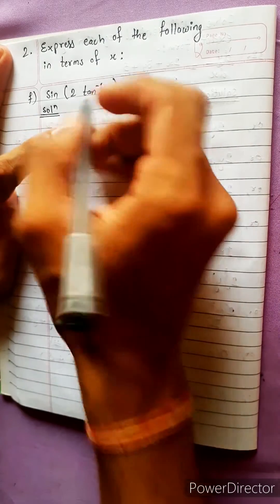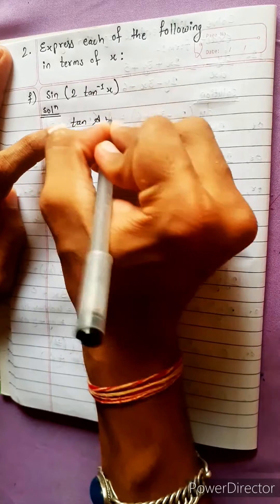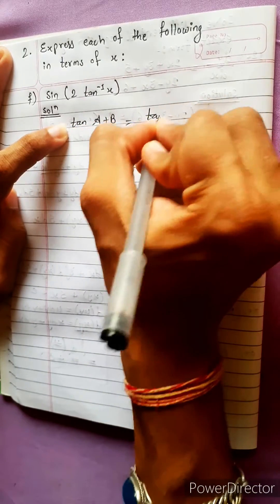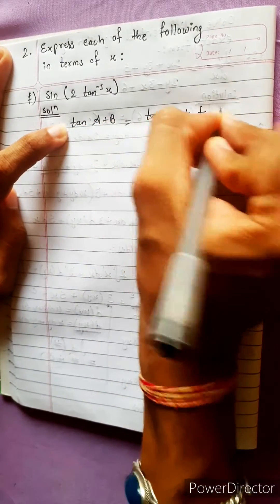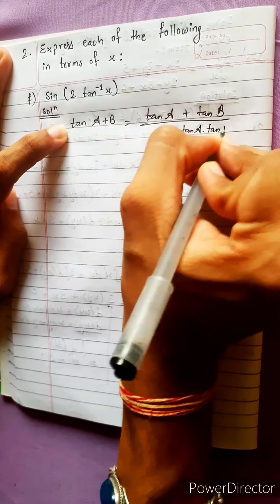Express each of the following in terms of x. Okay, before starting let's write one thing: tan(A + B) equals tan A plus tan B divided by 1 minus tan A into tan B. This formula everybody knows.